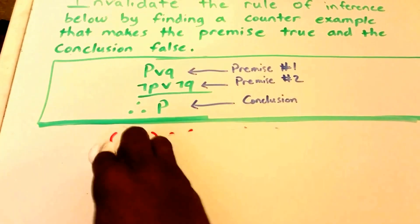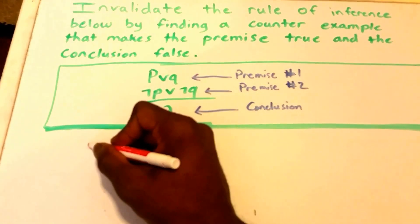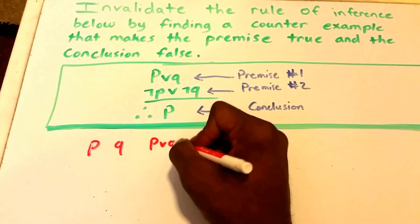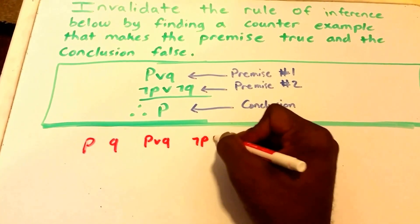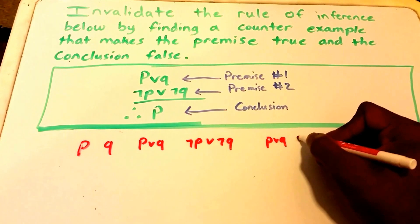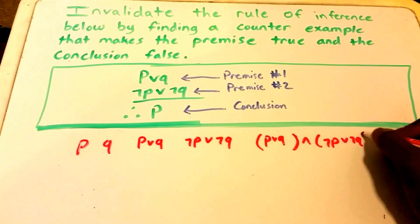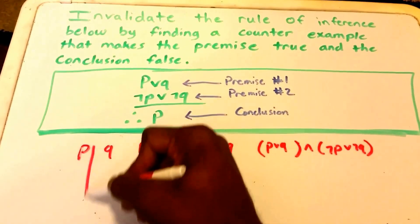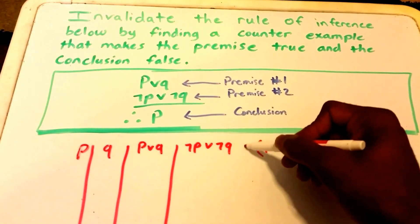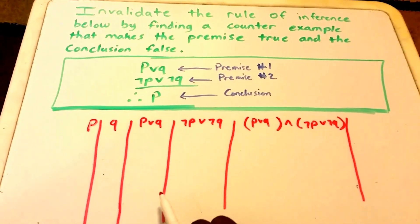So we can use a truth table to solve this. I'm going to go ahead and create the truth table. We have our P value, we have our Q value, we'll have P or Q, then we'll have not P or not Q, and then we'll have our P or Q and not P or not Q combined.